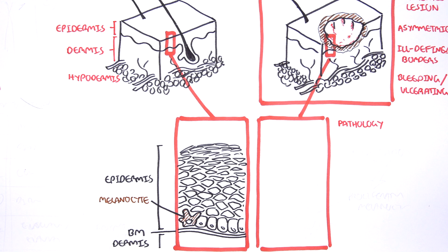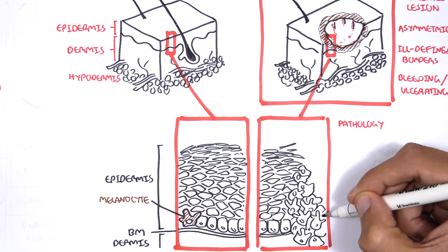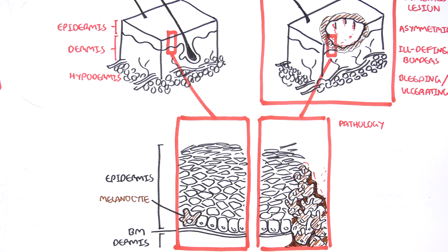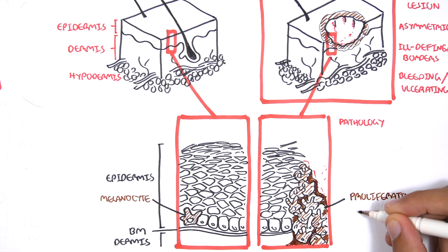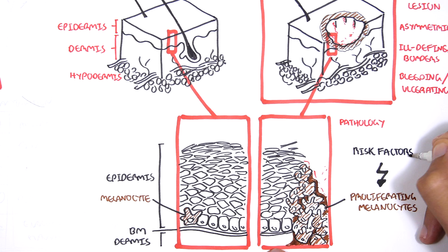Just above the basement membrane, we have a special cell of the skin known as melanocyte. Melanocytes are important for us because they help protect us from UV radiation and they help in our skin pigmentation. In melanoma, what happens is we have proliferating melanocytes. So these melanocytes that are normally harmless become mutated and they grow and divide rapidly, resulting in melanoma. These risk factors can lead to these proliferating melanocytes.